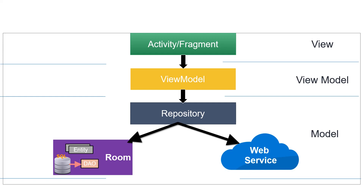This is all about MVVM. In short, the data source is the Model, the activities and fragments are the Views, and the ViewModel acts as a bridge between View and Model. If these things are implemented properly, we get a nice clean architecture where layers are modular and decoupled from each other. Every layer will have well-defined responsibilities. Every layer will only know about the components directly below it. The ViewModel retrieves data from Repository but doesn't need to know the different sources of data in the Model. And the View gets data from the ViewModel without knowing anything about the Model or needing to do any database-related operations.